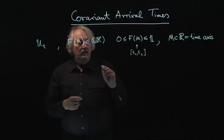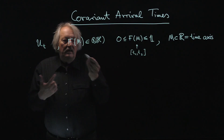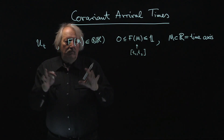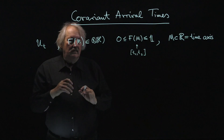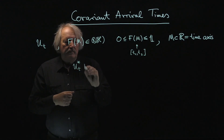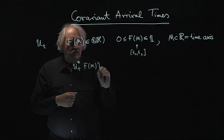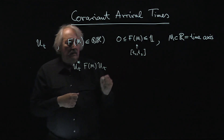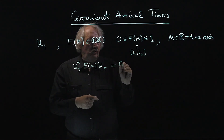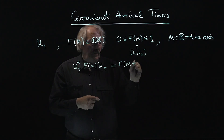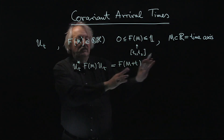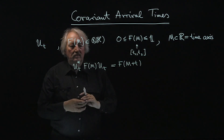The covariance property says that this probability distribution transforms correctly under the time evolution. It says that u_t* F(m) u_t equals F of the time-shifted set — meaning measuring after a time shift just shifts the distribution. The set of times is every element shifted by the same time; you just shift the interval.